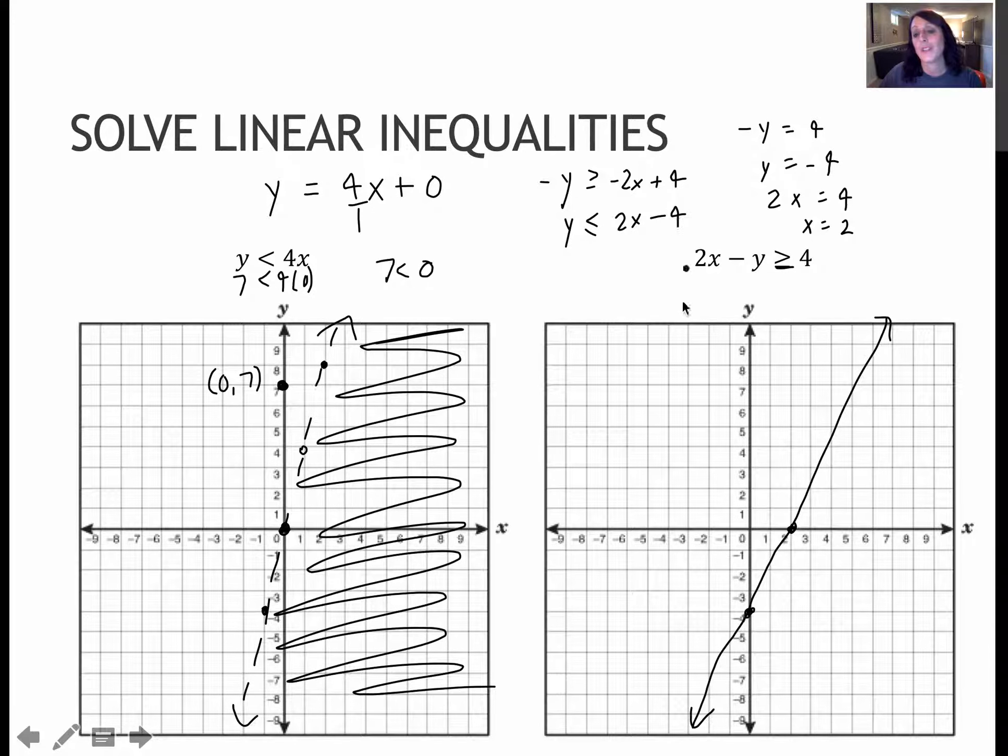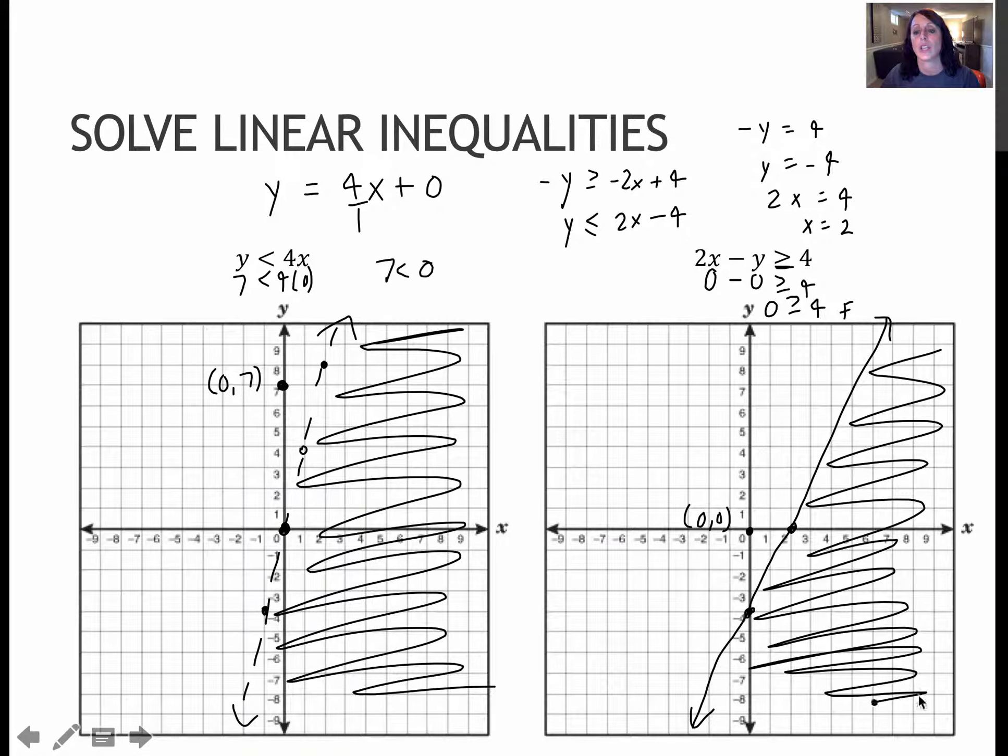I'm going to use my favorite test point here, which is 0, 0, and see what happens. So I get 0 minus 0 is greater than or equal to 4. So 0 is greater than or equal to 4, which of course is false, which means don't shade towards 0, 0. Shade the opposite side.